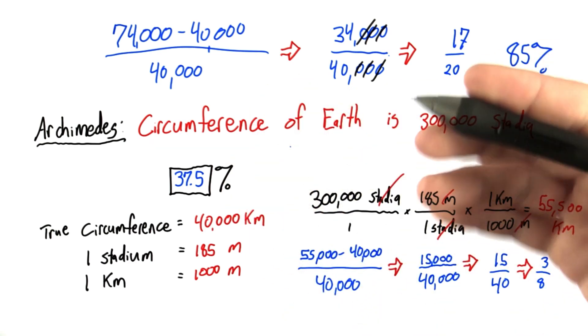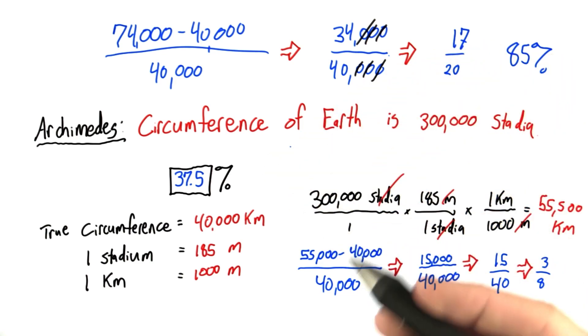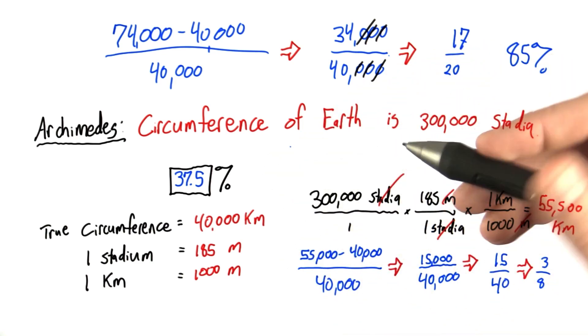Plato and Archimedes were both really smart guys, but both of their guesses were quite far off from the true circumference of the Earth.